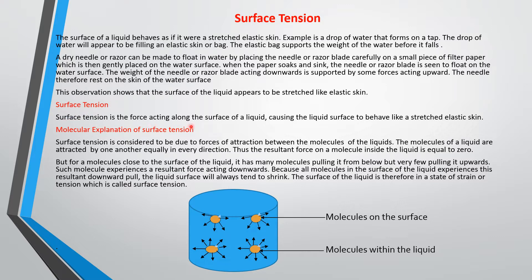Surface tension is a force acting along the surface of a liquid, causing the liquid surface to behave like a stretched elastic skin. That is exactly what we discussed — the surface of the water behaves like an elastic skin, and because of this, a needle or razor blade can float on top of water, and some insects can easily walk on the surface of water. These are observations that show that yes, the water surface is under tension.